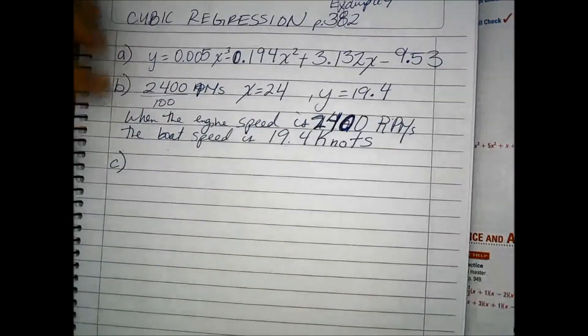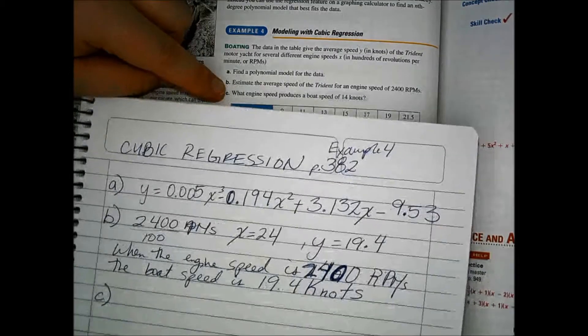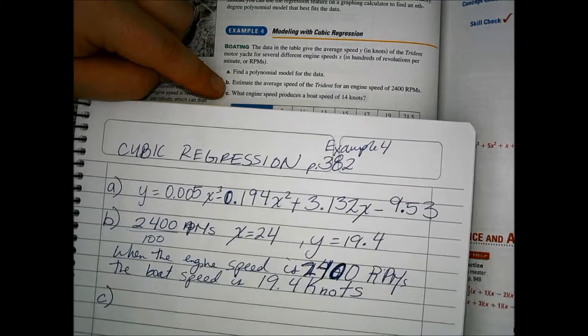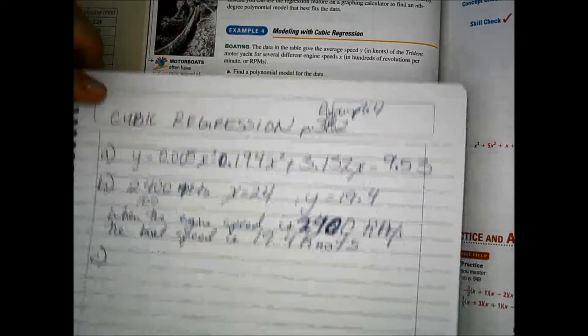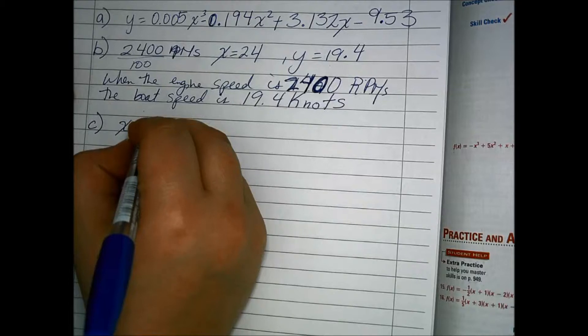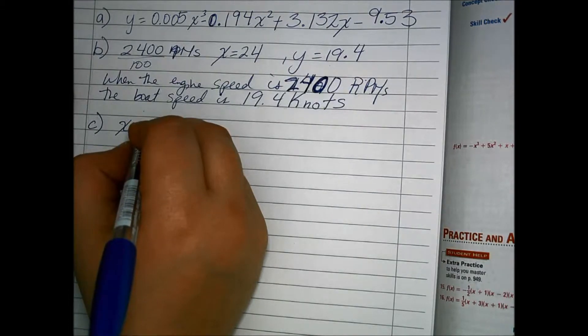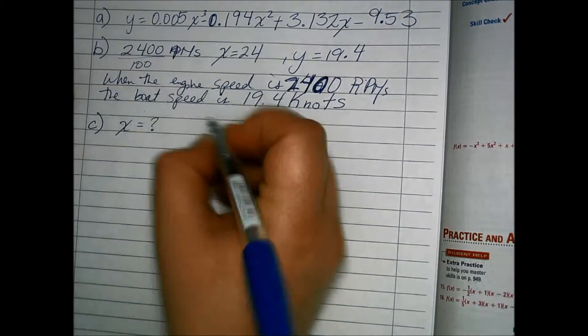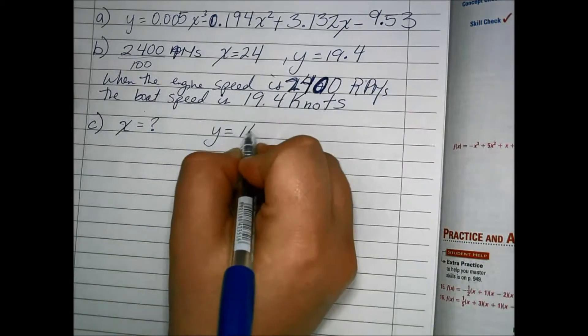And finally, what engine speed produced the boat speed of 14 knots? So here we have what is our input value when our output value is 14.